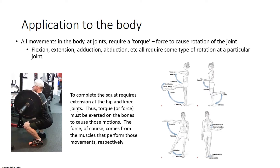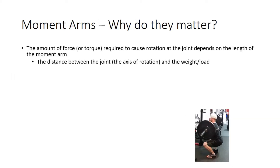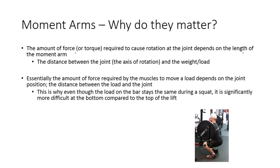The torque must be exerted on the bones via the muscles that perform those movements. To extend the knee and stand up, the quadriceps produce the rotational force at the knee joint. For hip extension, the hip extensors — glutes and hamstrings — exert that force at the hip joint. Moment arms matter because they determine the amount of force required by the muscle to cause movement at a joint. The moment arm is the distance between the joint and the load.